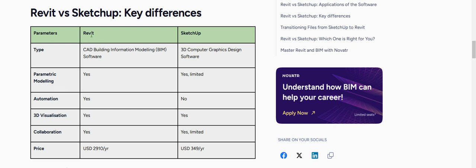Parametric modeling is available in Revit, but it's limited in SketchUp. Automation is available in Revit and it's not available in SketchUp. And collaboration is available in Revit and limited in SketchUp.